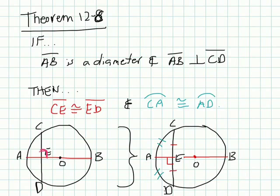Then what we know is that these two segments are going to be congruent to each other, so CE is going to be congruent to DE, so you can see these two are equal. And also, arc CA is also going to be congruent to arc AD. So if you have a diameter and a chord hits it perpendicular to it, it's going to break up these segments into equal parts, and also these arcs are going to be equal to each other.